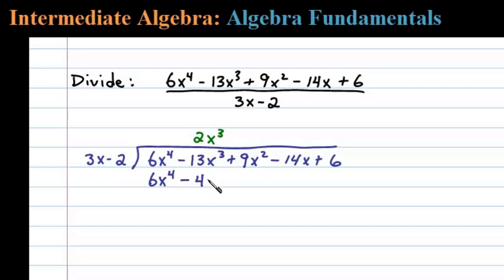Now at this point the division algorithm requires that we then subtract. 6x to the fourth minus 6x to the fourth is zero, and when we subtract a negative term we're really adding. So negative 13x cubed plus 4x cubed leaves us with negative 9x to the third.